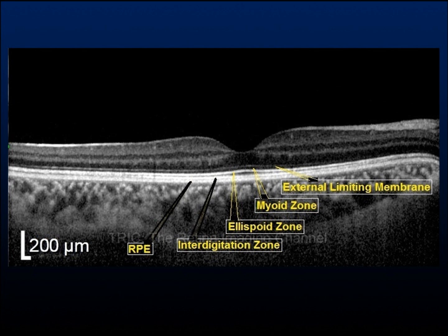The ellipsoid zone is followed briefly by a hyporeflective zone which is the photoreceptor outer segments. Then there are two hyperreflective bands: the inner band is called the interdigitation zone and the outer band is the retinal pigment epithelium.